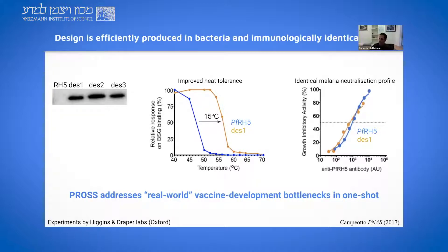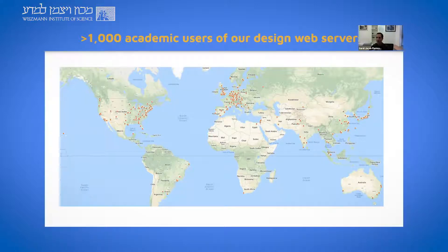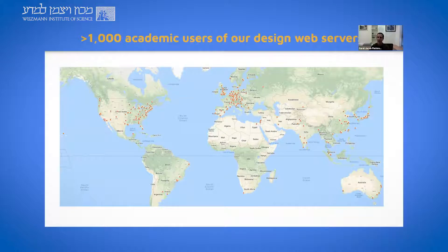This method is completely automated and we developed it into a web server so that anyone in the world can use it efficiently and quickly. Over the past four years, it's been used by more than a thousand different users from around the world. In the context of the coronavirus pandemic, we've already seen several groups use our web server to stabilize the spike protein for use as a potential vaccine. Normally they don't even need our help — they simply log into our web server and use the Weizmann computer cluster to design improved spike proteins, though we obviously extend our help happily when needed.